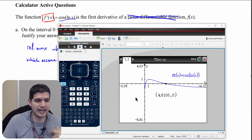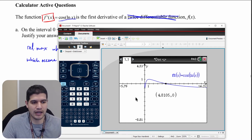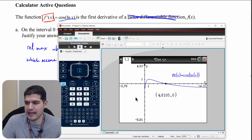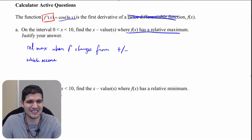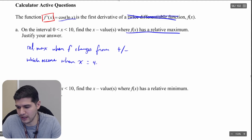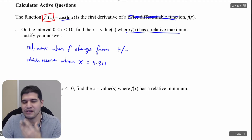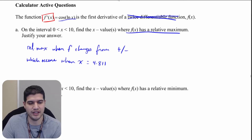So I'm getting 4.8105, which I'll write as x equals 4.811. As long as you go to three decimal places you'll be fine — four decimal places is even better.